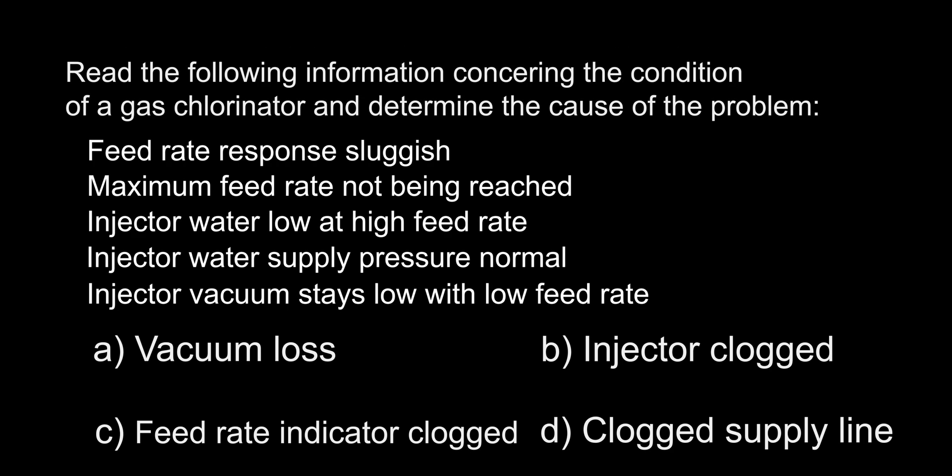Read the following information concerning the condition of a gas chlorinator and determine the cause of the problem. Feed rate response sluggish. Maximum feed rate not being reached. Injector water low at high feed rate. Injector water supply pressure normal. Injector vacuum stays low with low feed rate. A. Vacuum loss. B. Injector clogged. C. Feed rate indicator clogged. D. Clogged supply line.